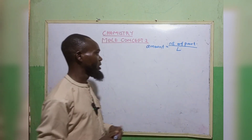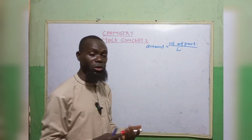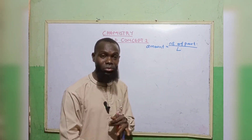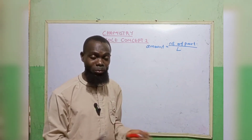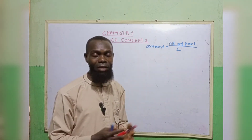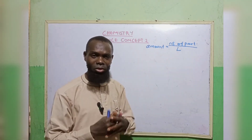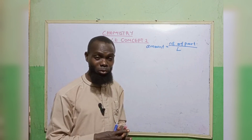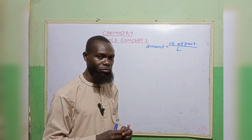If you recall, number of particles — particles would mean an atom, anions, molecules — they are particles. While your N_A is the Avogadro's constant, that is a very constant value. It has a constant value of 6.02 multiplied by 10 to the power of 23.